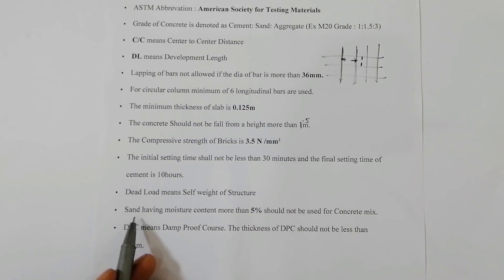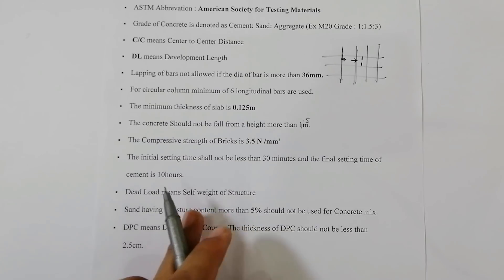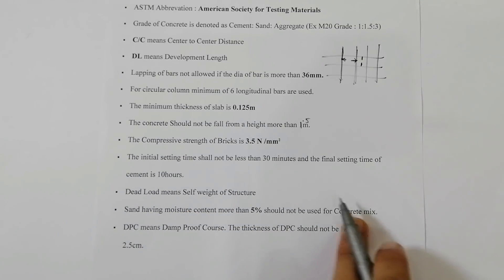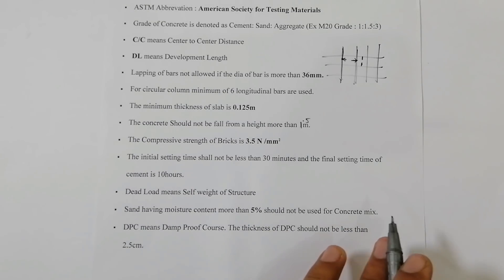The other one is: sand having moisture content more than 5% should not be used in concrete mix. If sand has more than 5% moisture, it is not able to be used in concrete mix. If it is less than 5% - 4%, 3%, 2% - it's okay and suitable to use in concrete mix. But it should not be used if the moisture of the sand is more than 5%.